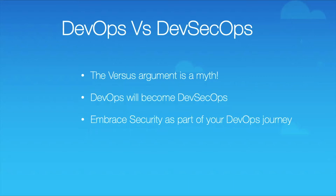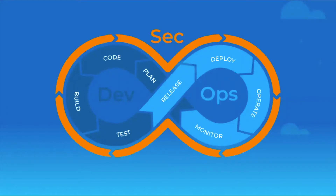What we want to do is show you how to embrace security as part of your DevOps journey. Think of the infinity DevOps loop — security embraces every stage. As you plan, security is around it. As you code, security is around it. As you build, security is around it. When you're planning, you're thinking about planning some security in, maybe starting to plan with the security team.